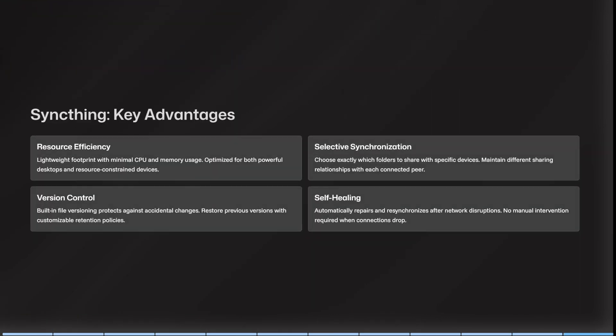Looking at some key advantages: SyncThing is lightweight with minimal CPU and memory use, optimized for both powerful desktops and resource-constrained devices. It also has selective synchronization, so you can choose exactly which folders to share with specific devices.